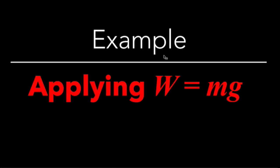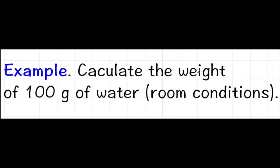I'm going to show an example of how to apply Newton's law of universal gravitation in the form W equals mg. The goal of this problem is to calculate the weight of water, and the water is at room conditions, so we're thinking of liquid water, and we have 100 grams of water specified.